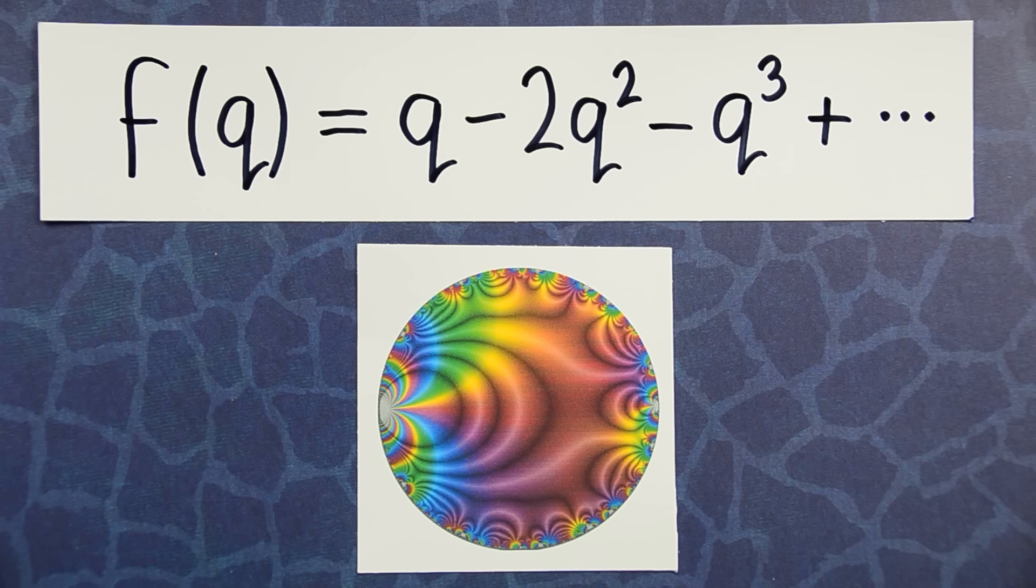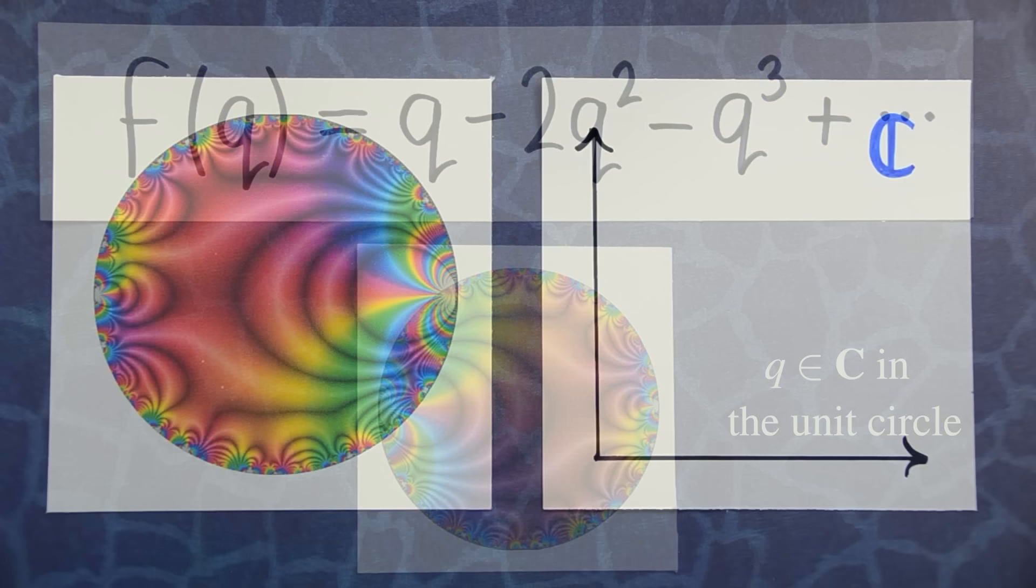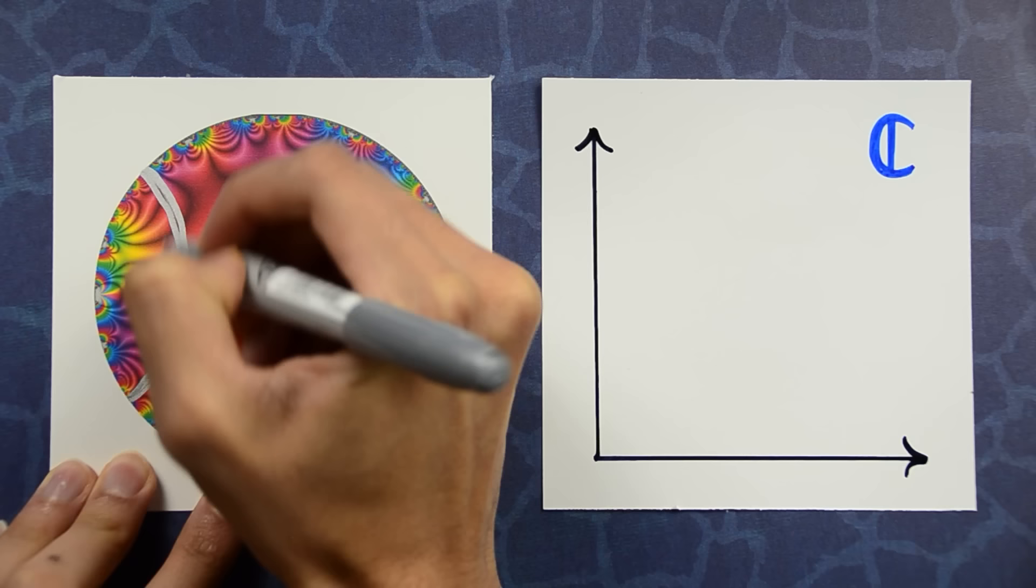Here, the variable q is a complex number in the interior of the unit circle in the complex plane. To find the true meaning of the coefficients of the modular form, they took a curved arc in the circle and integrated the modular form over that curved arc.